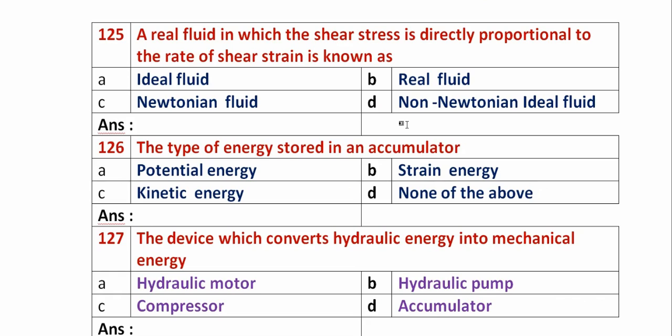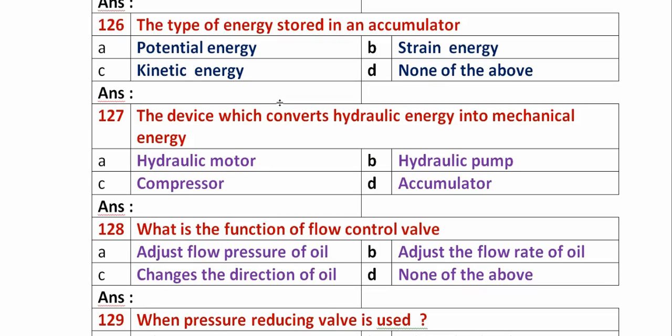Question 125: A real fluid in which shear stress is directly proportional to the rate of shear strain is known as? Option A: ideal fluid. Option B: real fluid. Option C: Newtonian fluid. Option D: non-Newtonian fluid. A fluid in which shear stress is directly proportional to rate of shear strain is a Newtonian fluid, which obeys Newton's law of viscosity. So option C, Newtonian fluid, is the right answer.